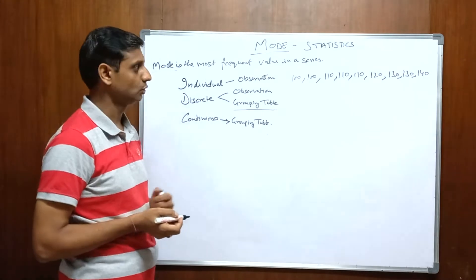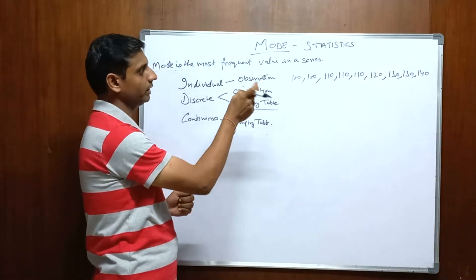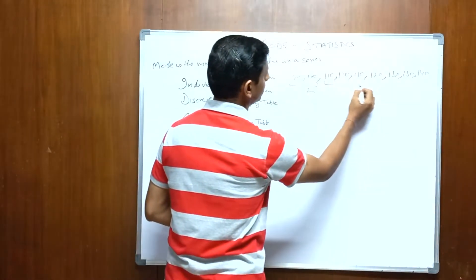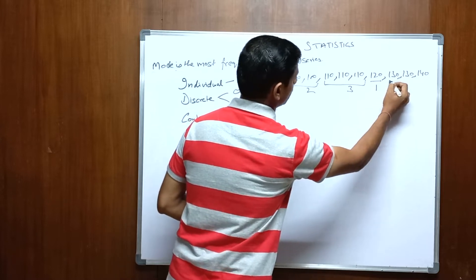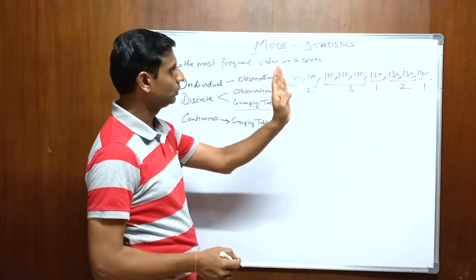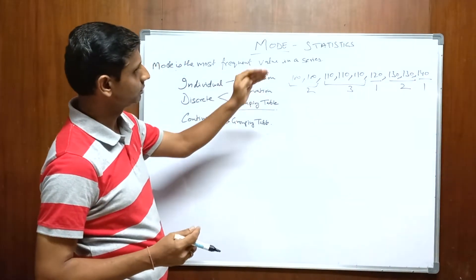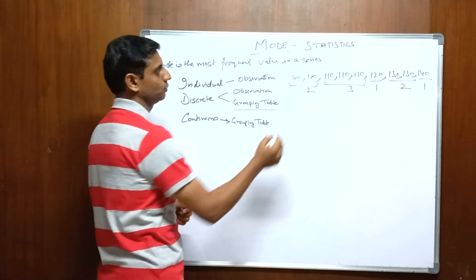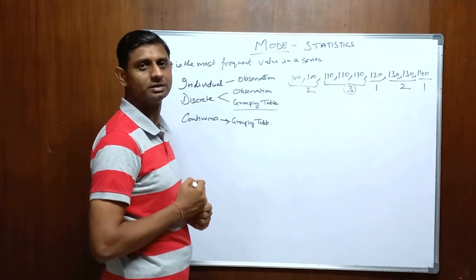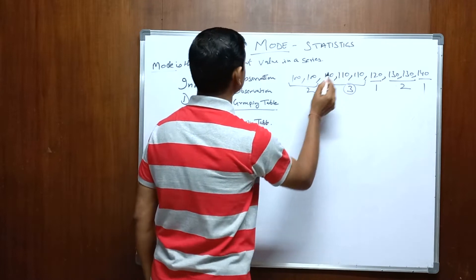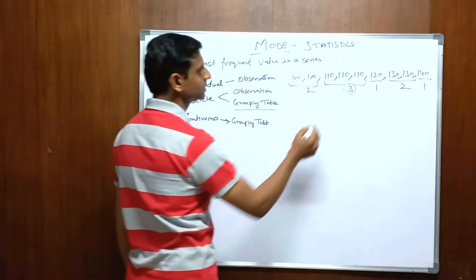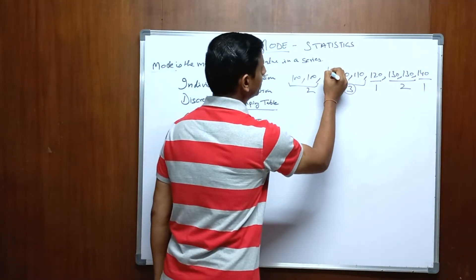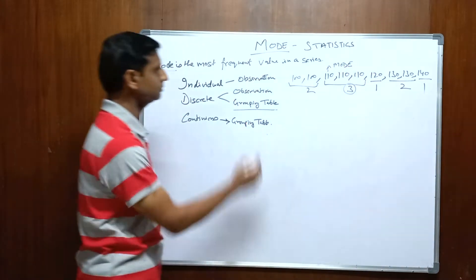Now if we need to find out the mode, we need to figure out how many times each order value appears. Rs.100 order comes 2 times, Rs.110 order comes 3 times, 120 comes 1 time, 130 comes 2 times, and 140 comes 1 time. Just by looking, you are able to notice that Rs.110 comes 3 times — this is the maximum frequency. So as per definition, 110 is the most frequent value, and 110 is the mode of this series.